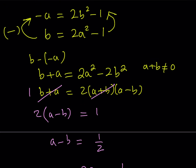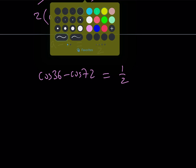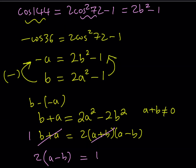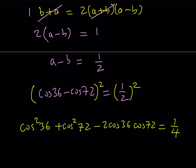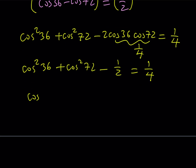Now I need the sum of their squares. I'll square both sides of cosine 36 minus cosine 72 equals one half. Squaring gives cosine squared 36 plus cosine squared 72 minus 2 times cosine 36 times cosine 72 equals one fourth. We already know cosine 36 times cosine 72 equals one fourth, so 2 times that is one half. Therefore cosine squared 36 plus cosine squared 72 minus one half equals one fourth, which gives cosine squared 36 plus cosine squared 72 equals three fourths.